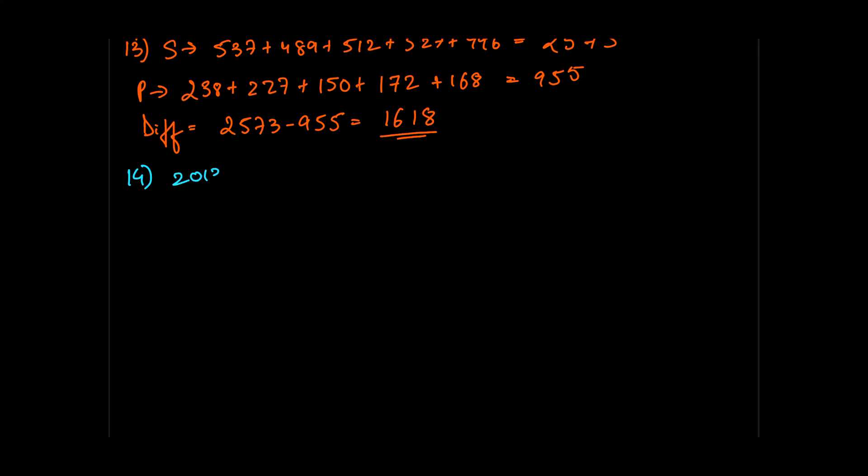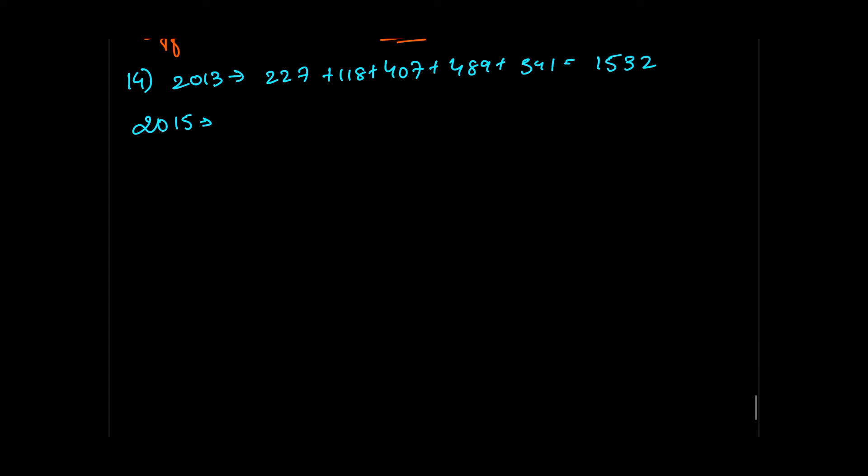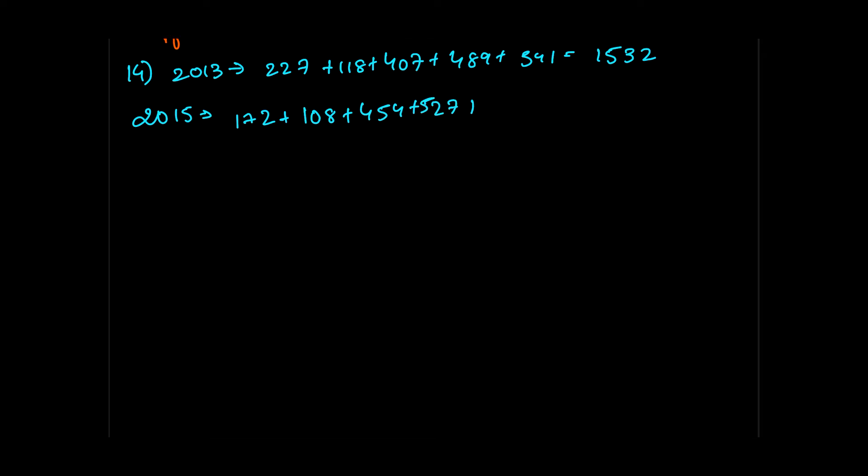For number 14, we see that in 2013 my data says the number is 227 plus 118 plus 407 plus 489 plus 341. That would give me a value equals to 1532. Now the same data when compared for 2015—the data is 172, 108, 454, 527, and 364. For 2015 the data is 172 plus 108 plus 454 plus 527 plus 364, giving me 1625.